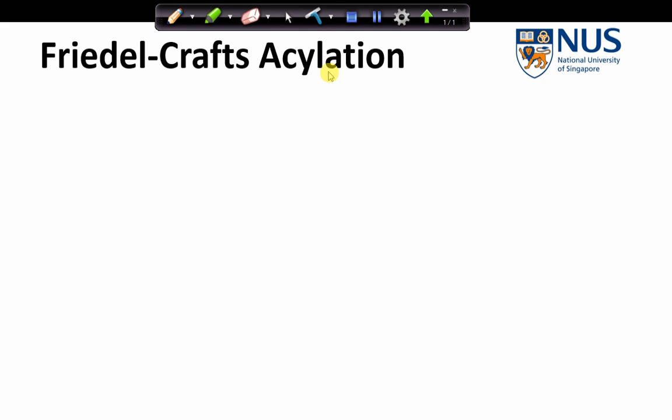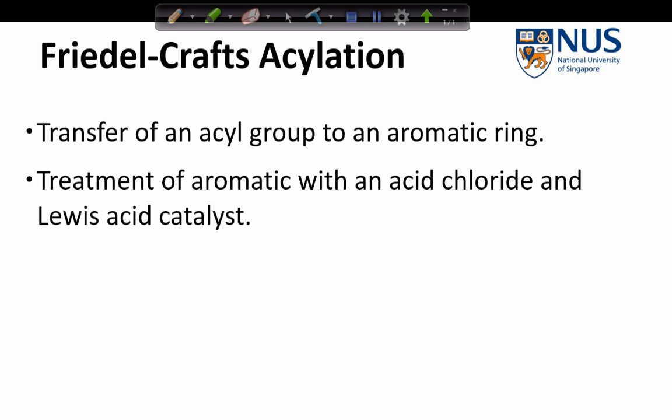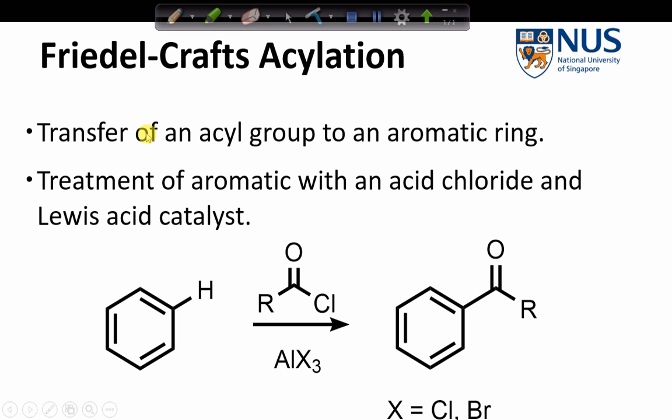Okay, now we'll move on to the second type of Friedel-Crafts reactions, the acylation. So as the name suggests, it's the transfer of an acyl group onto an aromatic ring. And it involves the treatment of an aromatic reagent with an acid chloride and a Lewis acid catalyst. And the product is a ketone, and this is the generic reaction scheme.